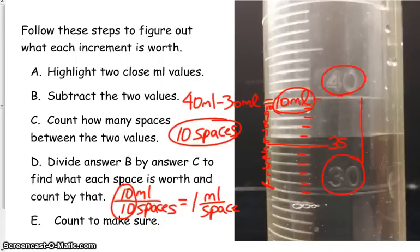So now we need to find our water level. So here is our water level right here. This is a plastic graduated cylinder, so there is no meniscus.